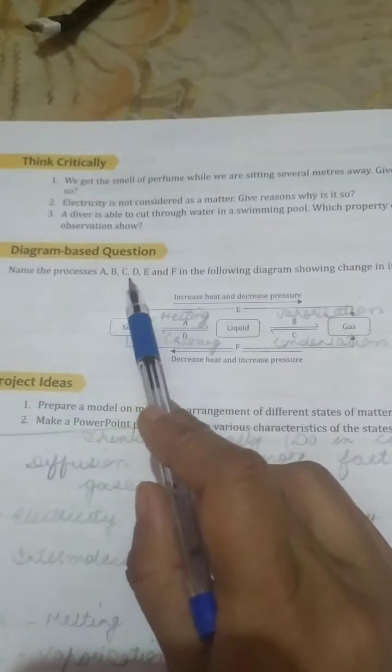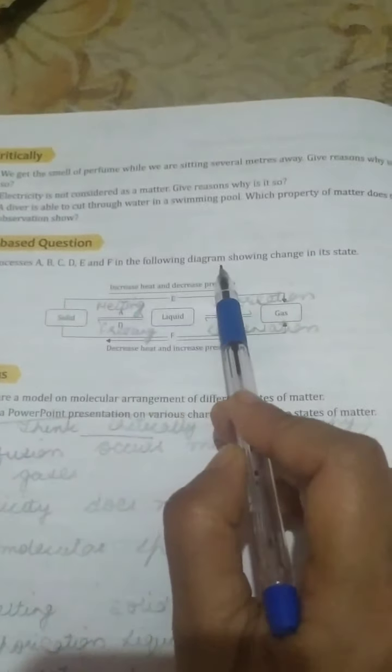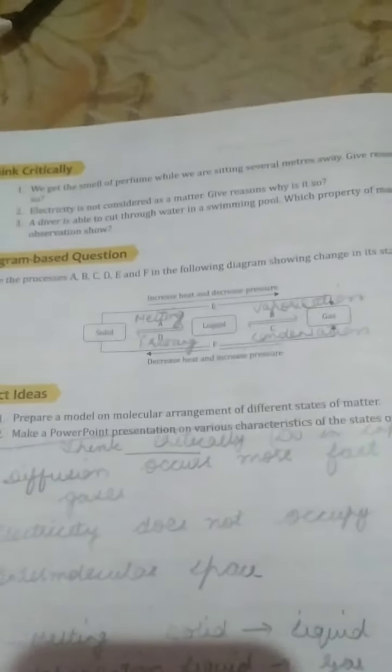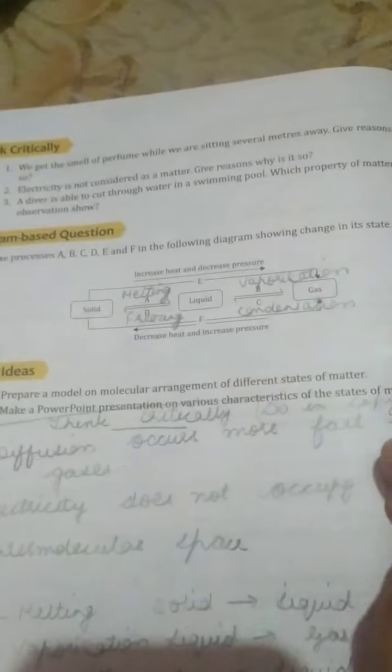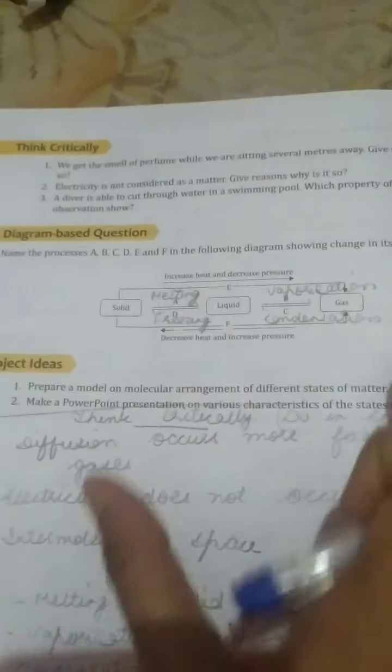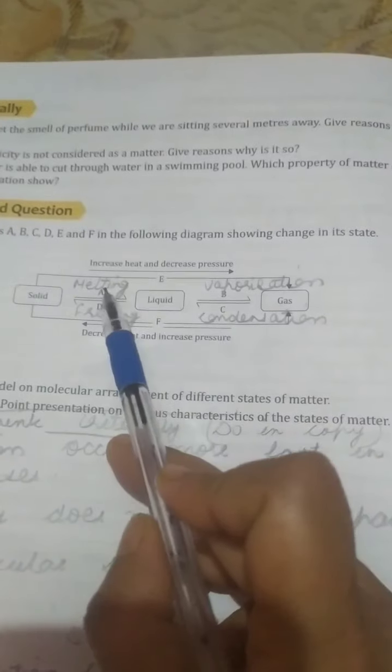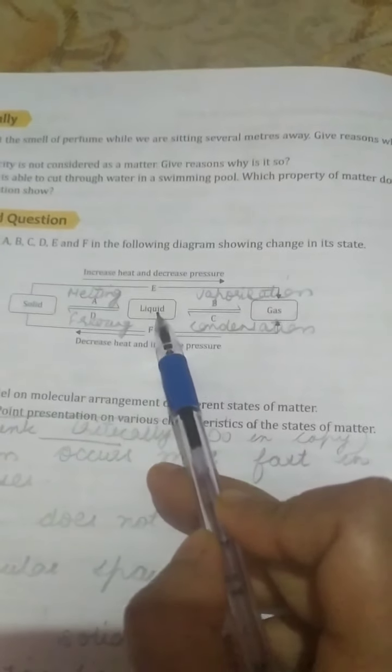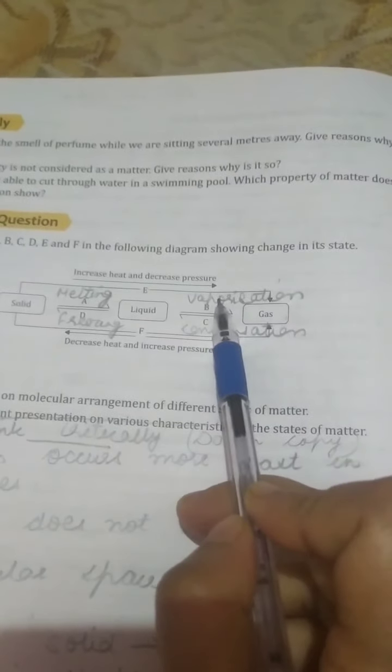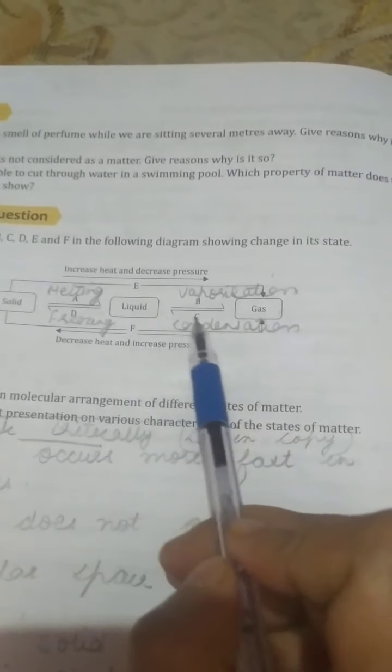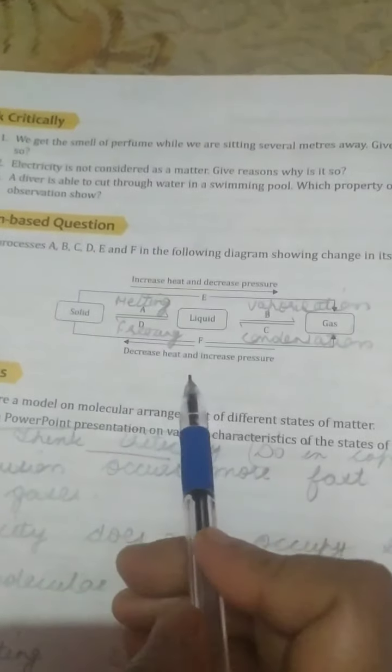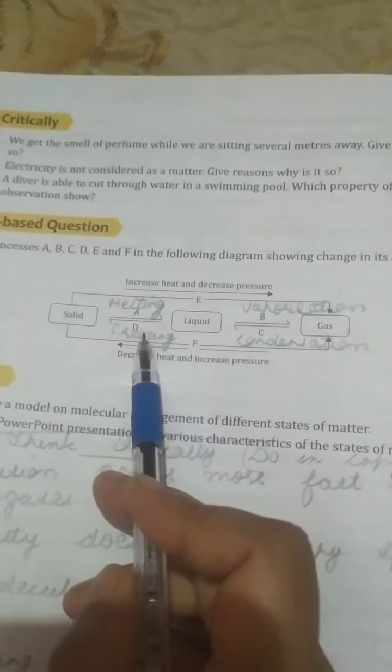Next, diagram-based question: name the processes A, B, C, D, E, and F in the following diagram showing change in state. Students, you will draw this in your copy. Take the whole page and draw this. First is solid to liquid, that is through melting. Then liquid to gas through vaporization. Again, gas to liquid, that is through condensation. And liquid to solid means the arrow shows from here it is going to that side, so due to freezing.